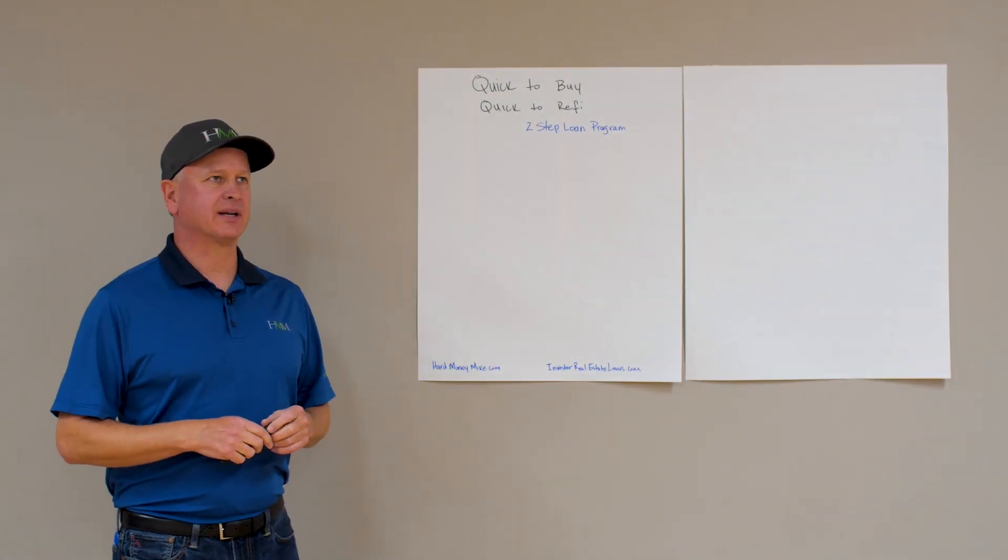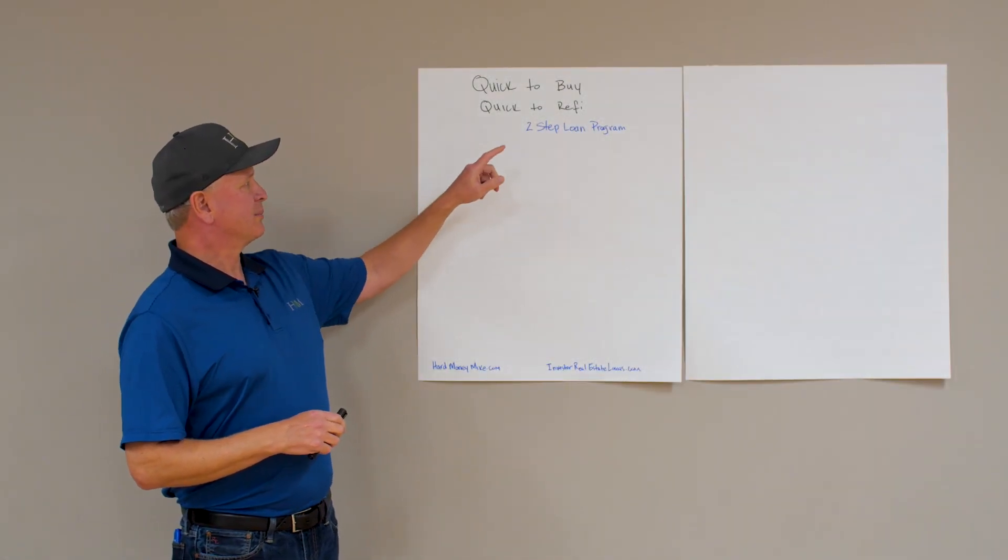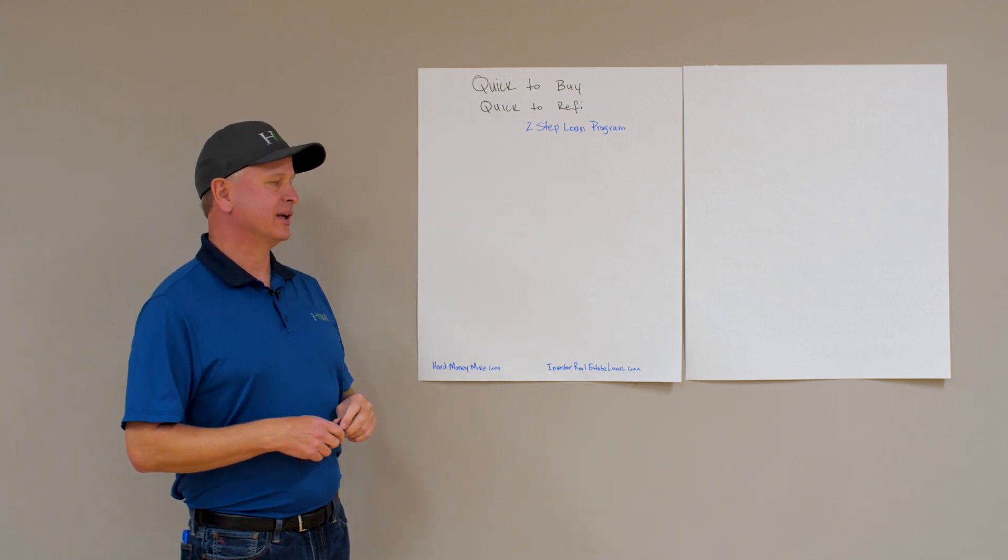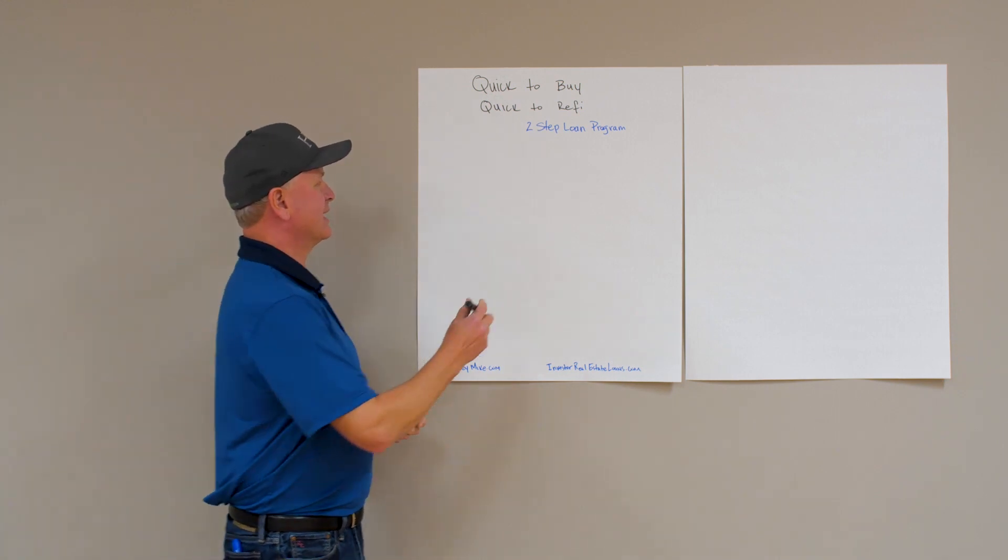Hello, this is Hard Money Mike and today we're going to talk about one of our programs, a two-step loan program, how to set it up quickly. We call it quick to buy, quick to refinance using the BRRRR method.